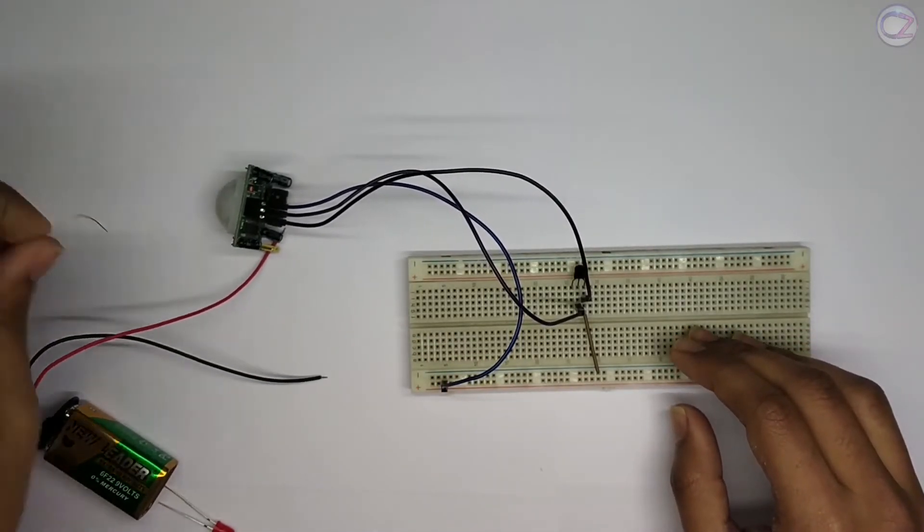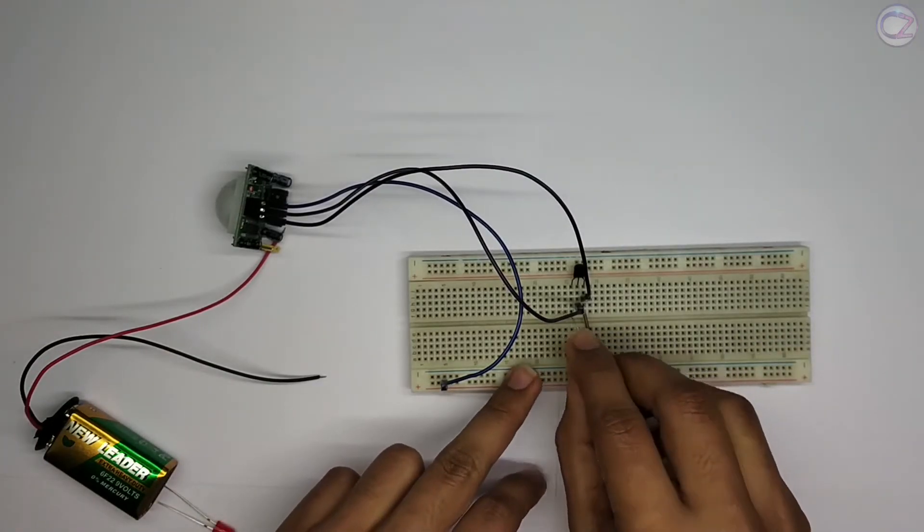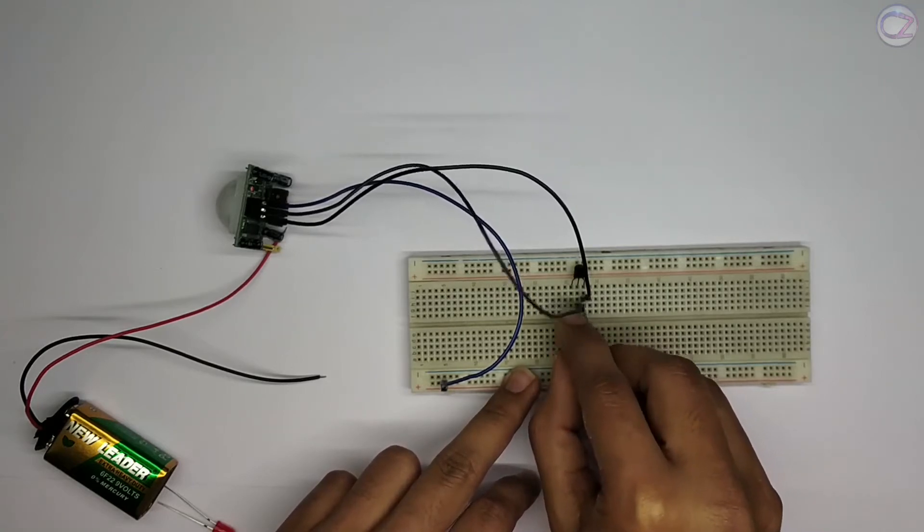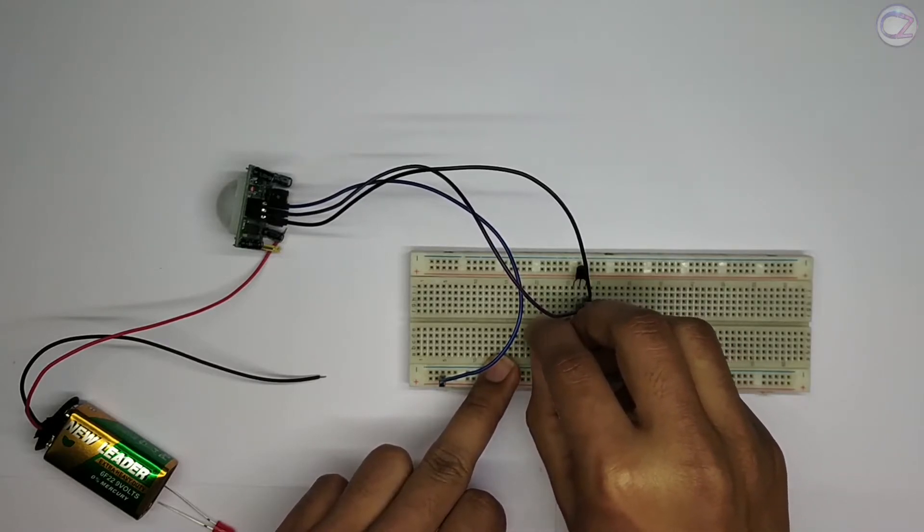Now connect the negative terminal of LED with the collector of transistor. You can use a 100-ohm resistor in series, otherwise the LED may be damaged. Connect the positive terminal of LED with source VCC.